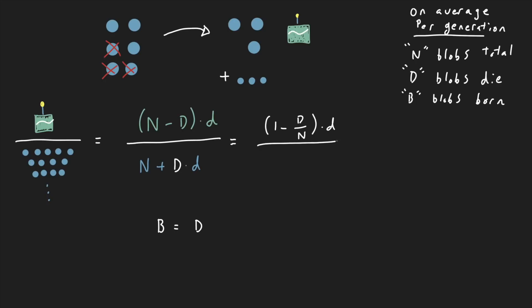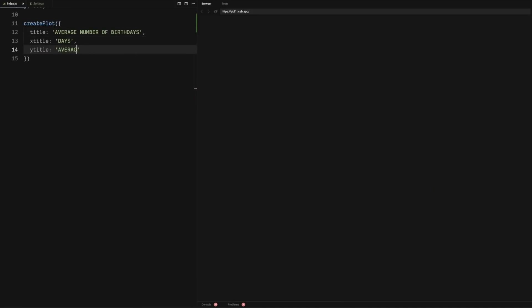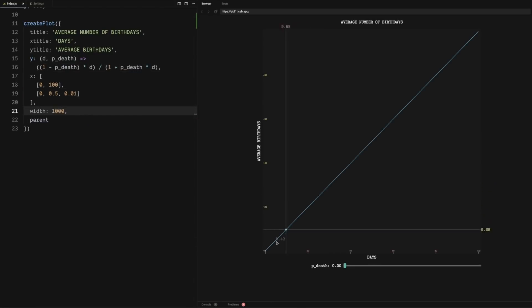We can simplify this by dividing the top and bottom by the number of blobs, and putting it in terms of the fraction of blobs that die. Let's graph this equation and see what it looks like. If 0% of the blobs die, that means that every blob gets one food every day. No blobs die, none are born, and the blobs all grow older together in harmony until the end of time.